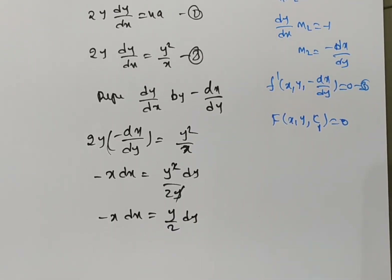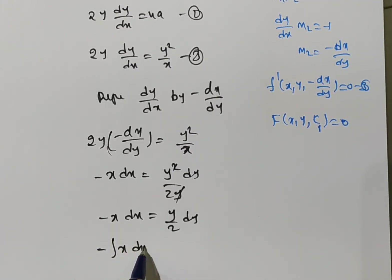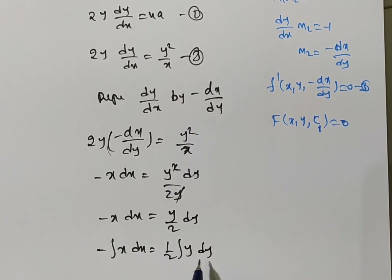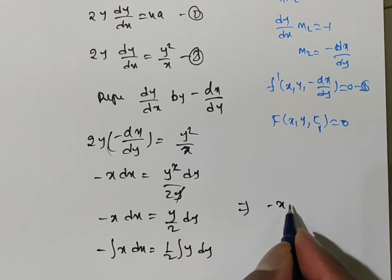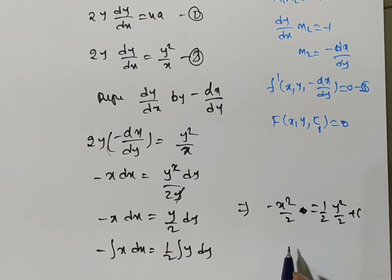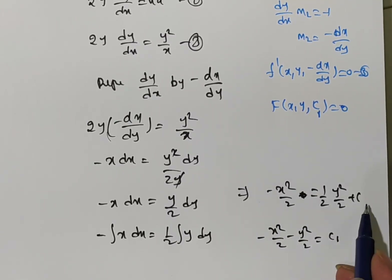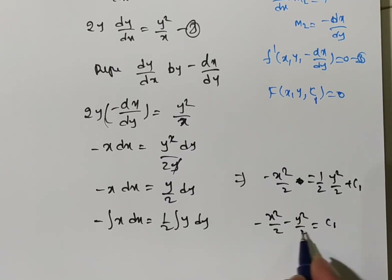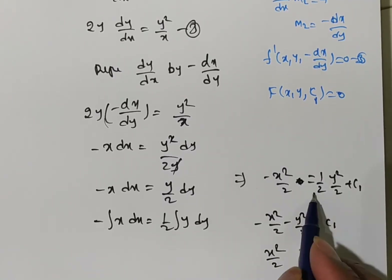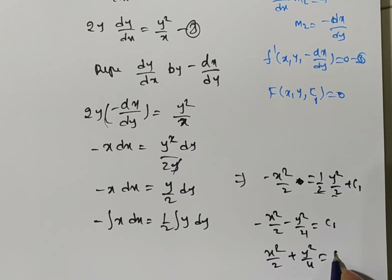Integrating both sides: -∫x dx = (1/2)∫y dy, which gives -x²/2 = (1/2)(y²/2) + c, i.e., -x²/2 = y²/4 + c. Rearranging, we can write x²/2 + y²/4 = c₁, where c₁ is a constant.